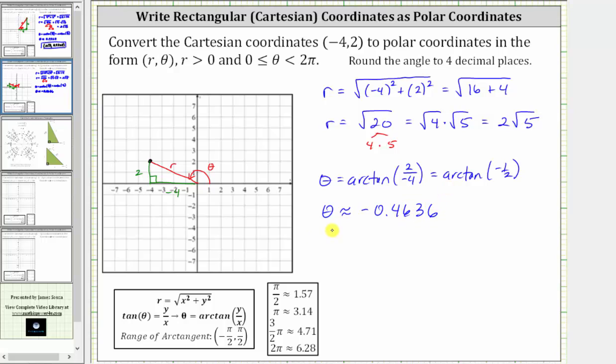But notice how this is not the angle we are looking for. This angle is actually in the fourth quadrant, in the opposite direction of the angle we want. So the angle that we found on the calculator is this angle here in the opposite direction. Rotating clockwise, this angle is approximately negative 0.4636 radians.